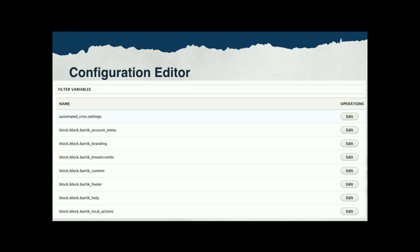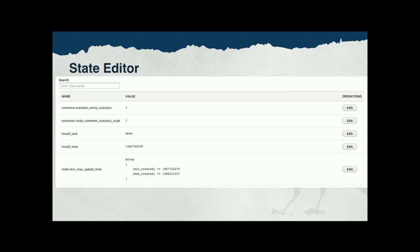The old name for this functionality was called the variable editor in prior versions. Similarly, the state editor lets you view the name-value pairs in the state system and lets you edit them. This has no corresponding Drupal 7 feature — it's new. There was no state system before; it was also the variable system in a terribly conflated way.